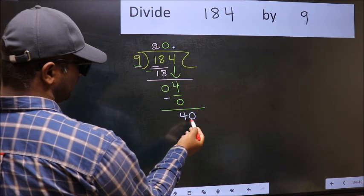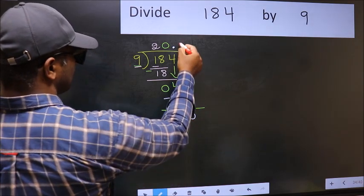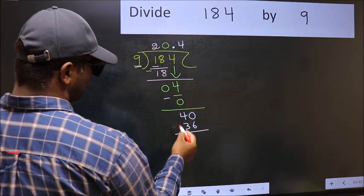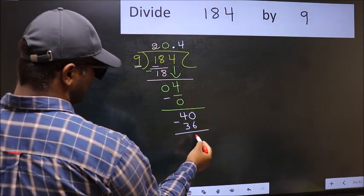So 40. A number close to 40 in 9 table is 9×4 is 36. Now you should subtract. We get 4.